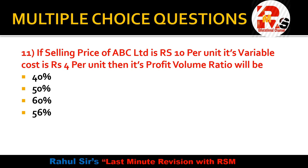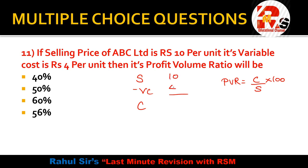Question number 11: If the selling price of ABC Limited is ₹10 per unit and variable cost is ₹4 per unit, what is the PVR? PVR = contribution ÷ sales × 100. Sales minus variable cost = 10 − 4 = 6 (contribution). 6 ÷ 10 × 100 = 60%. So the PVR is 60%.